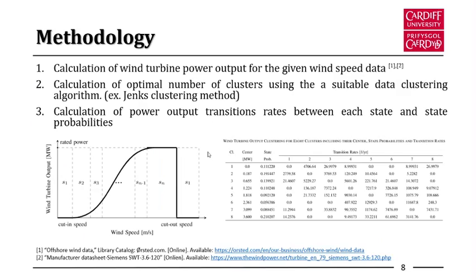In the next two slides I will briefly discuss the methodology used to address this reliability problem. From the time series wind speed data, wind turbine power output is calculated for a selected wind turbine. Then, using a suitable clustering method, this time series data is clustered into a finite number of wind turbine power output states as shown in the table. I used eight clusters which can optimally represent the wind distribution. We then assign a cluster number for each time series data point, calculate the transition rates between each state, and from this calculate the state probabilities, which are summarized in the table.